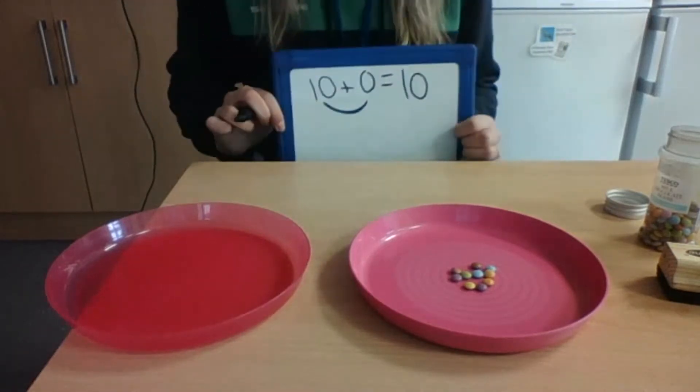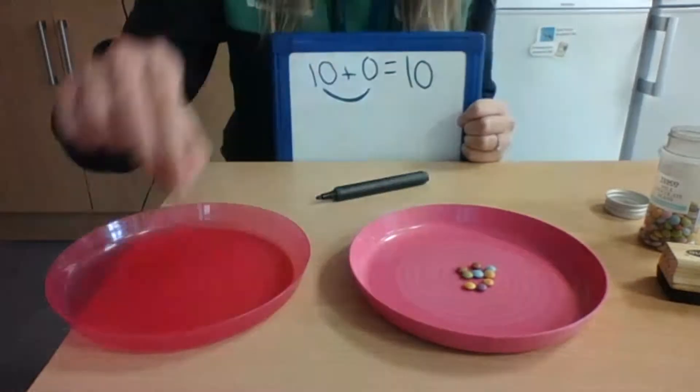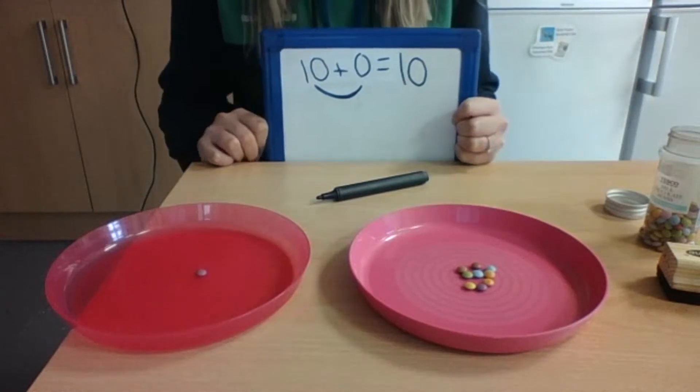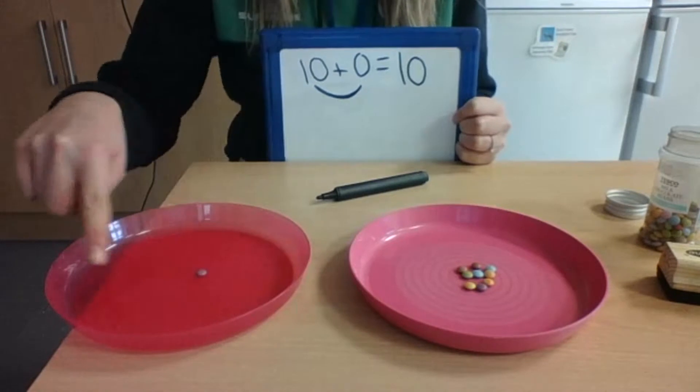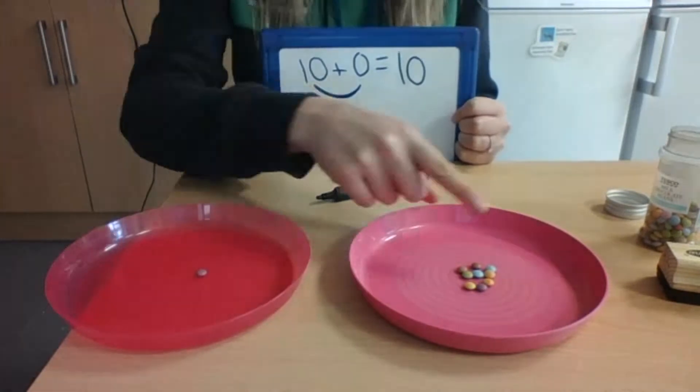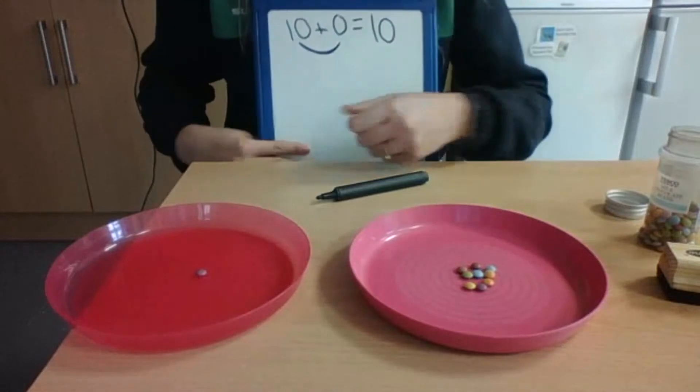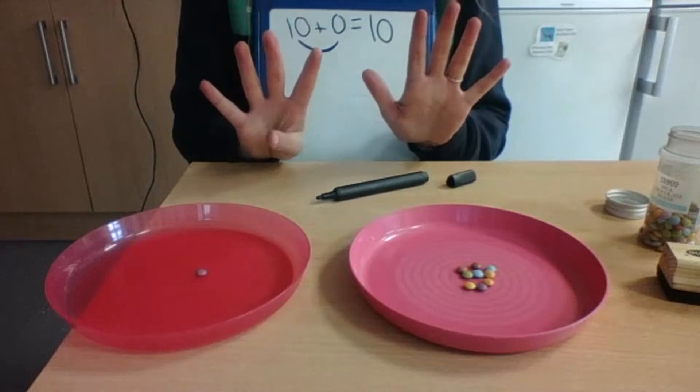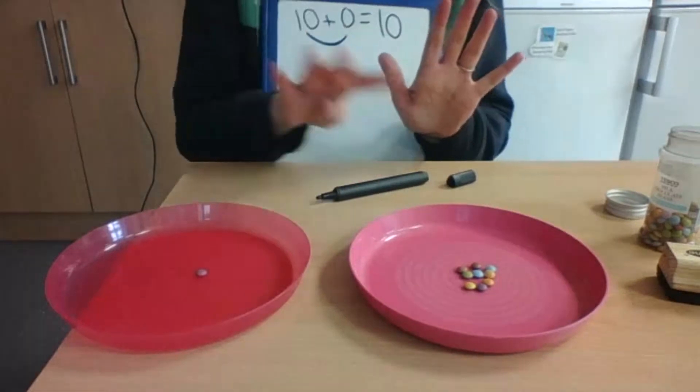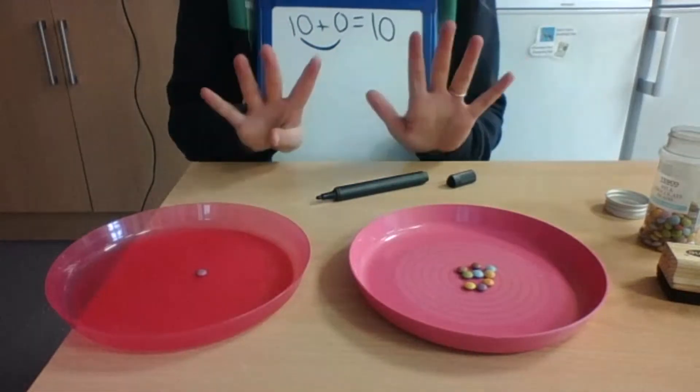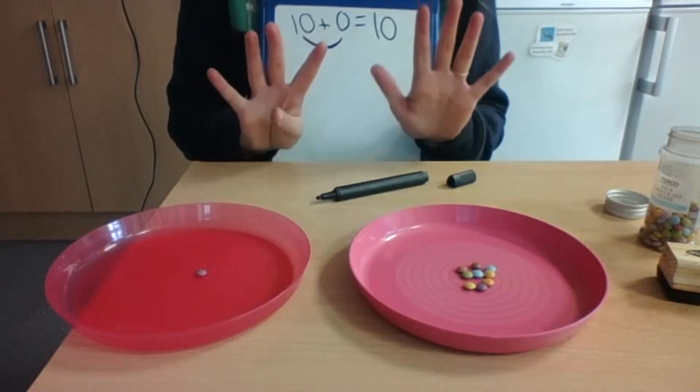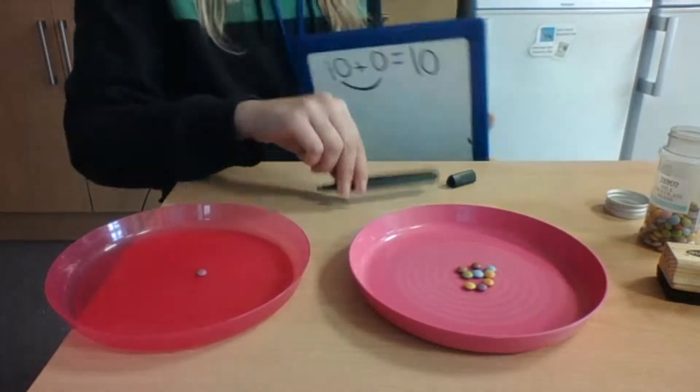Now if I move a smartie onto my red plate, what happens? Now can you tell me without counting how many are on my red plate? Just one. Now there were 10 on this plate but I've taken one away and put it on this plate. If we had 10 and we've taken one away, how many must be on this plate? 9. Because we had 10, we've moved one to the red plate which leaves us with 9. So we've got 9 on this plate.